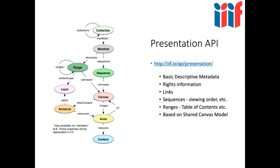In the last meeting before the break we looked at the Image API and three different ways of using it: one to use a commercial company, one to use an existing software provider like your DAMs, and then how to install the Image API itself. The Image API is great for images, but as soon as you want to do more and create presentation packages, you need to move on to the Presentation API. The Presentation API includes basic descriptive metadata, rights information, links to other digital objects, sequences of images such as a book or manuscript, and table of contents which are called ranges, all underpinned by a linked data vocabulary called the Shared Canvas Model.